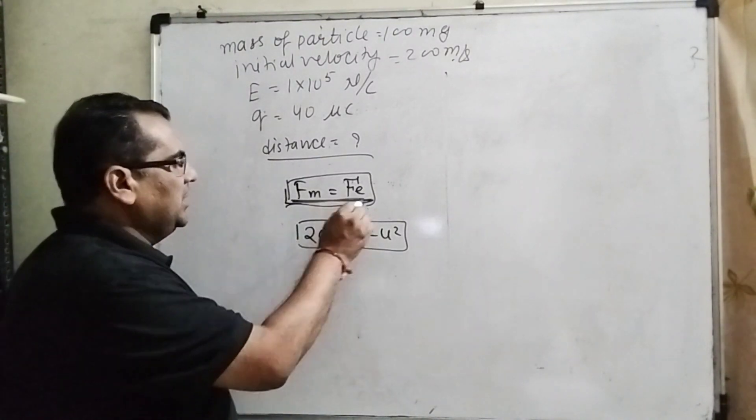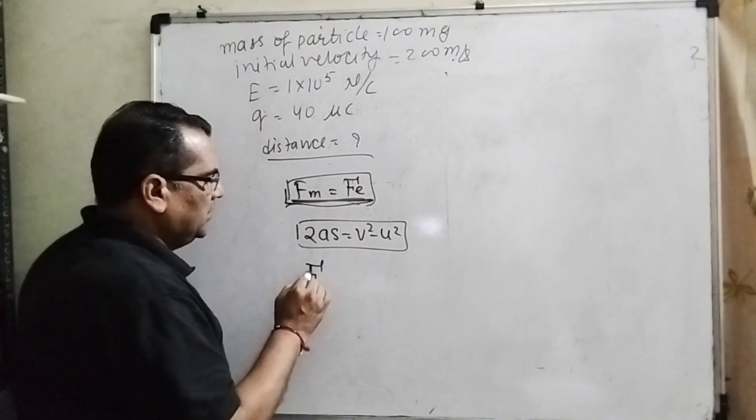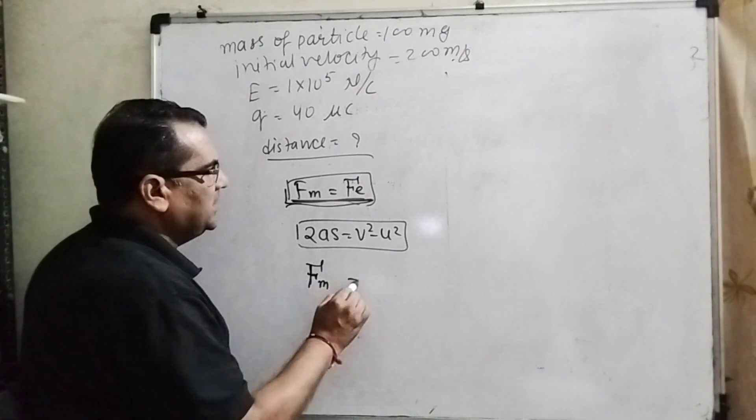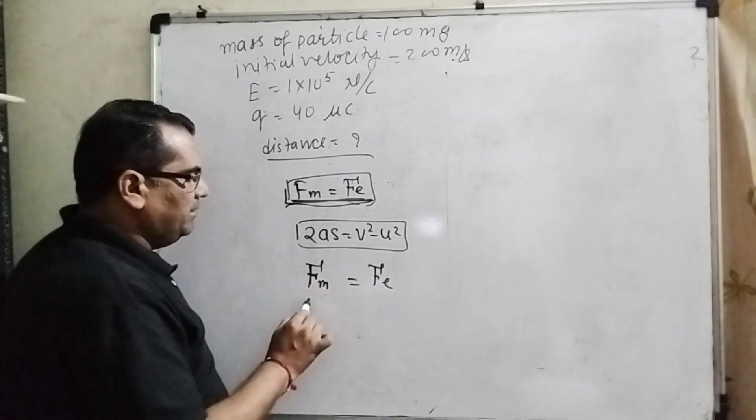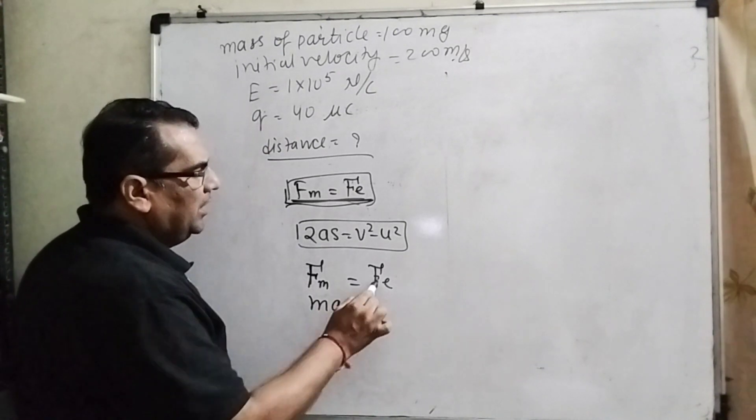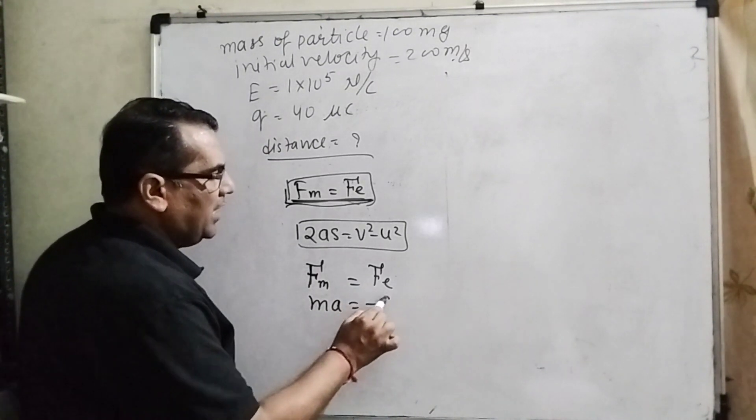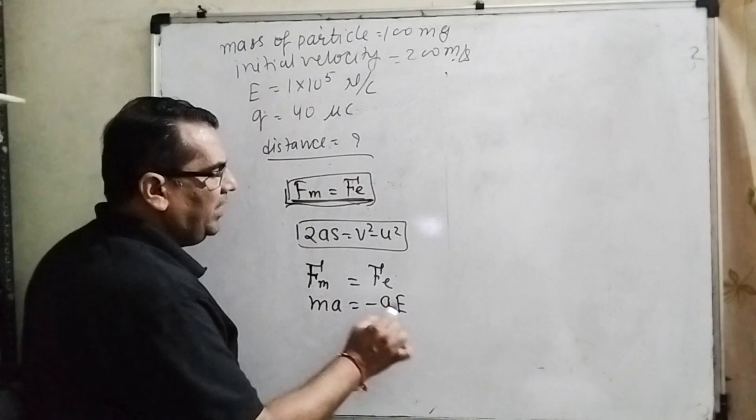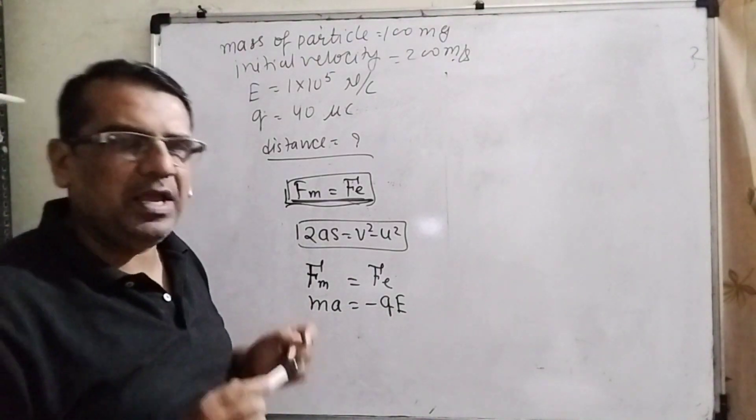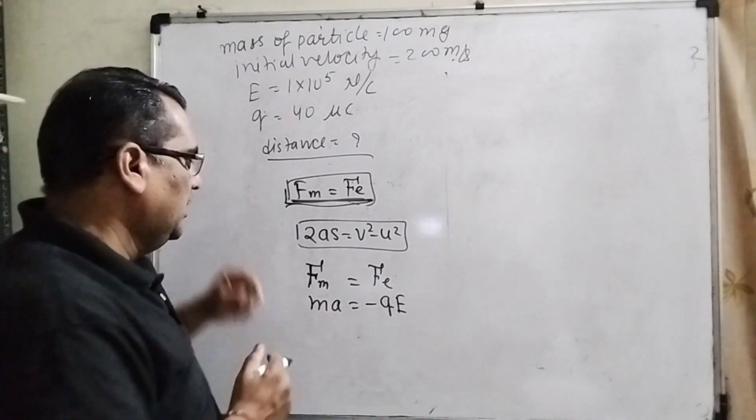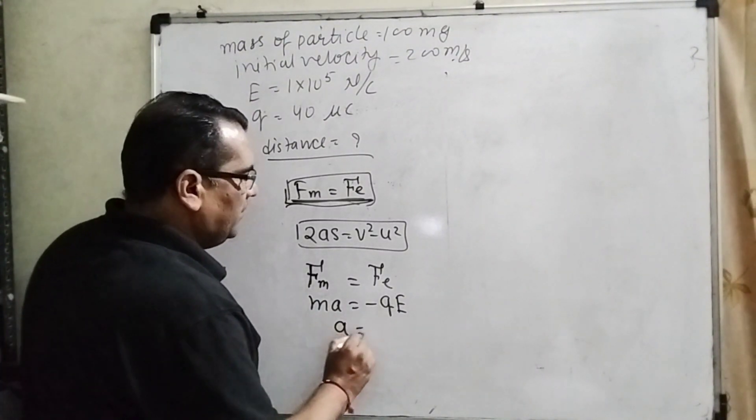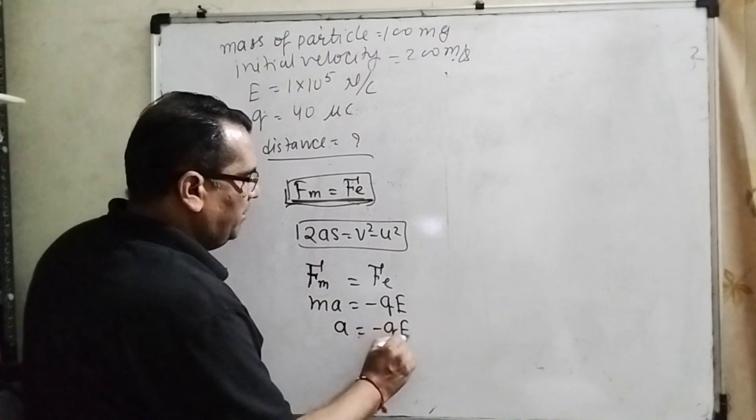Let us first use this formula: mechanical force Fm equals Fe, electrostatic force. Fm means mass into acceleration, and electrostatic force means -Q×E. Why do we take negative here? Because mechanical force and electrostatic force are exactly in opposite directions. Now, acceleration equals -Q×E/M.